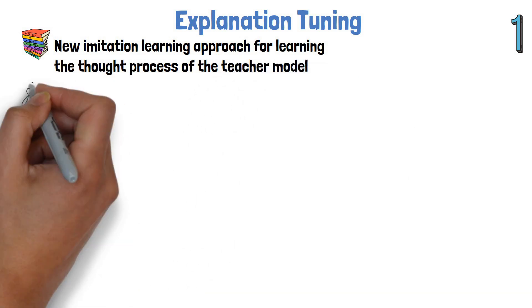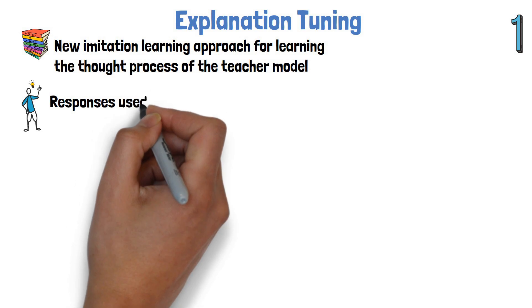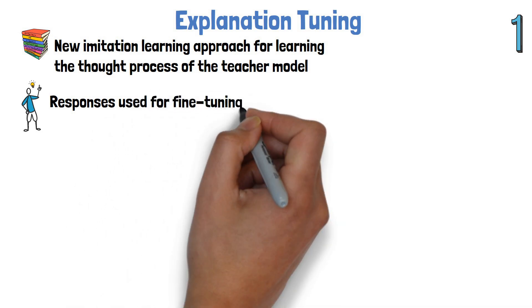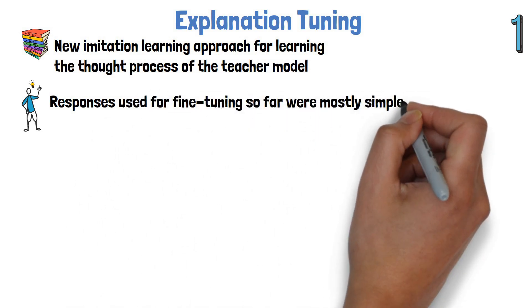The idea is that the reason current imitation learning-based models fail to reach higher quality is because the responses they use for fine-tuning are mostly simple and short.